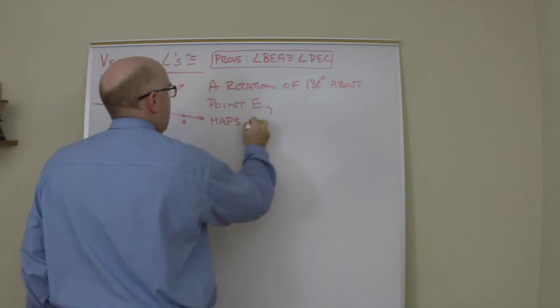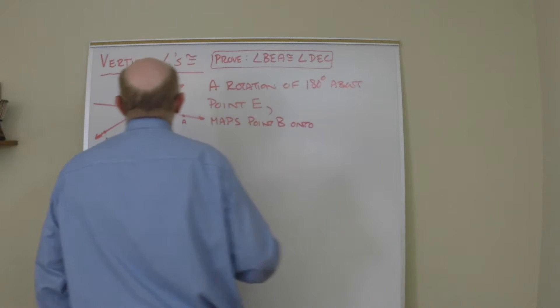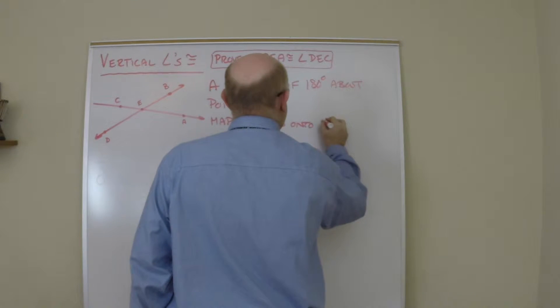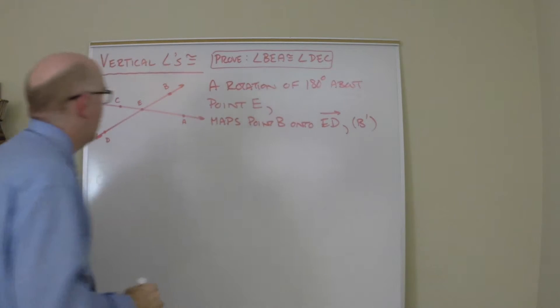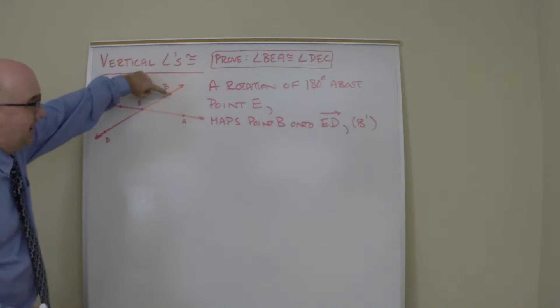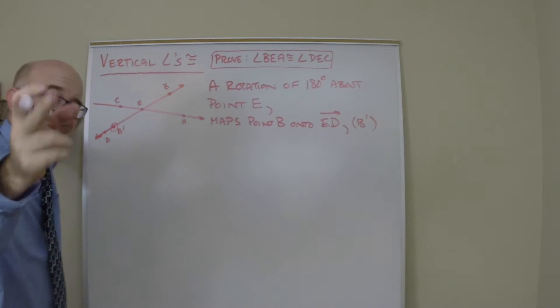This maps point B onto ray ED, known as B prime. When I rotate 180 degrees, B prime will land somewhere on the other ray, the same distance away—it has to land on that ray, that's important.